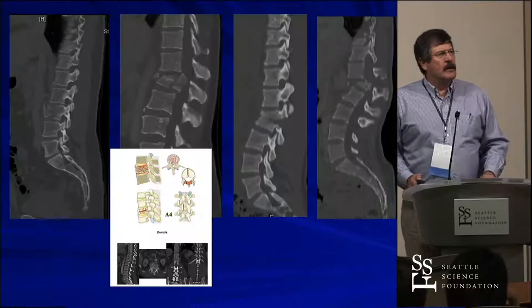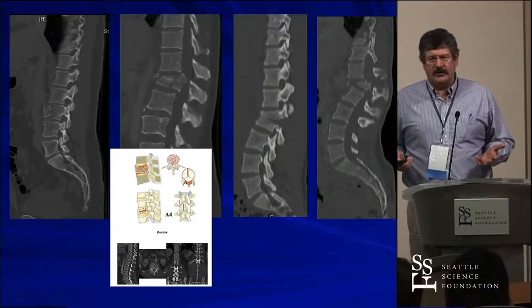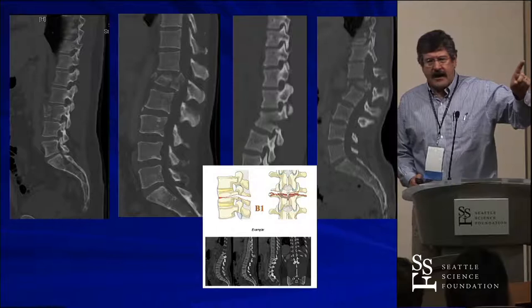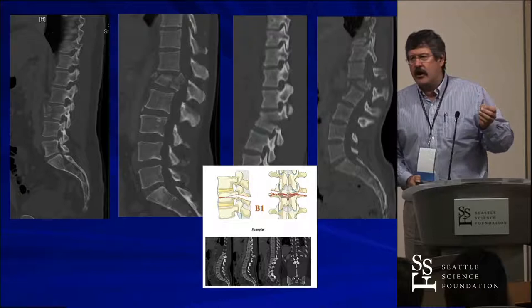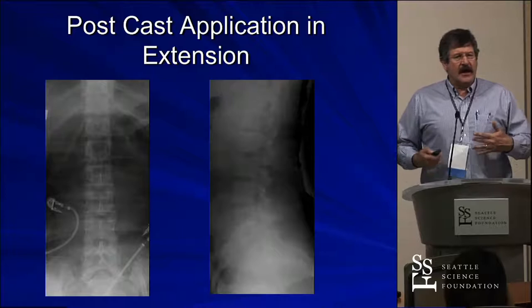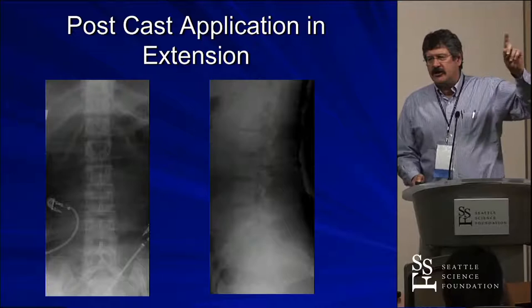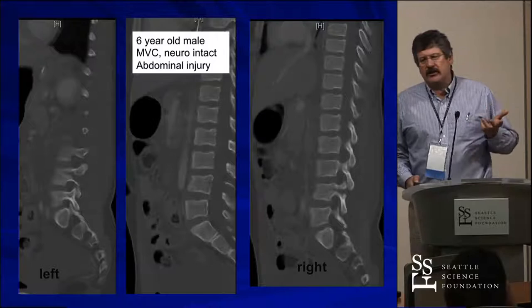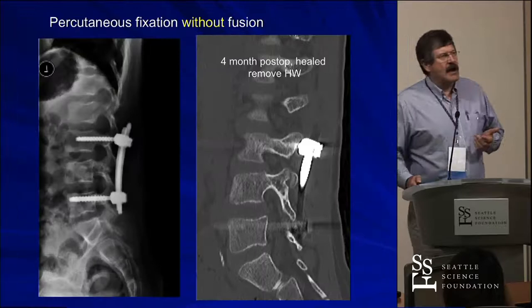The second fracture is an A4 burst — the posterior ligamentous complex is intact and it involves both superior and inferior endplates. The third fracture is the B1 fracture — very unique, a pediatric-only fracture. Why separate it? Because this is the only B fracture that can be treated nonoperatively. All you have to do is restore extension and get the two bony ends to contact. Here's an example of a young girl with a seatbelt injury and abdominal injuries treated in a cast in extension — at three months when the cast came off, it looks normal. Often now we use an internal cast percutaneously and remove the hardware down the road.